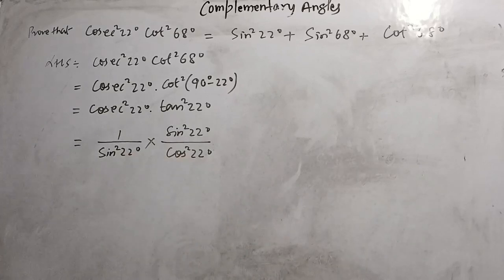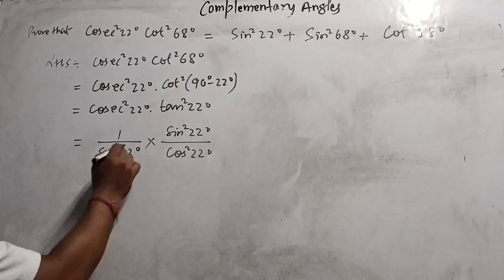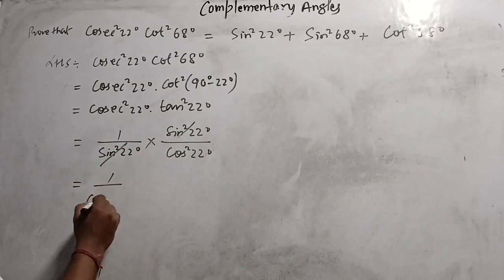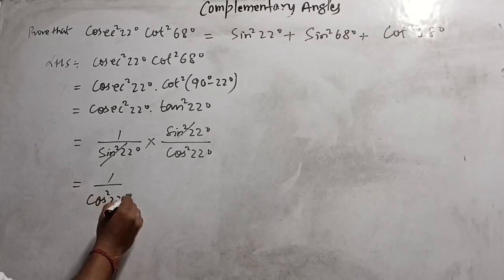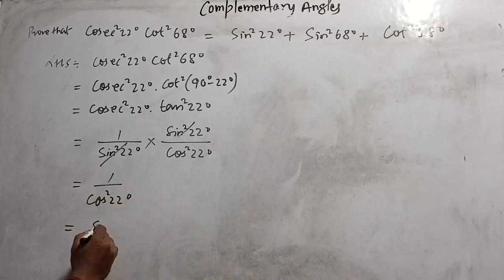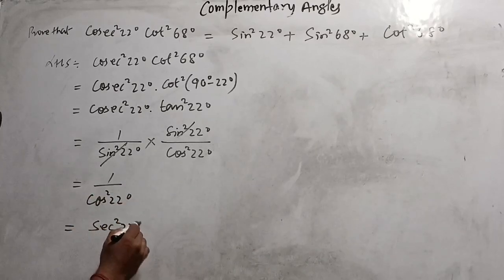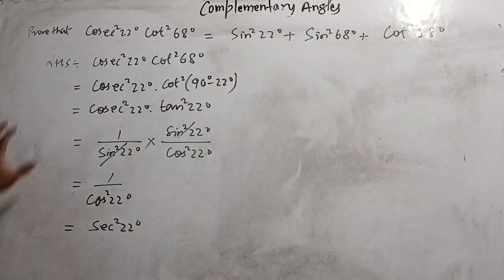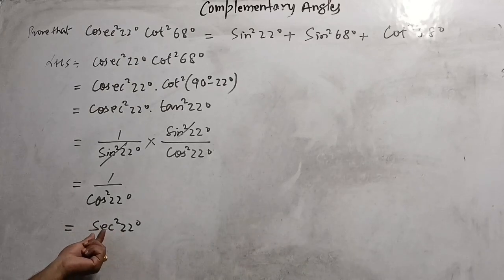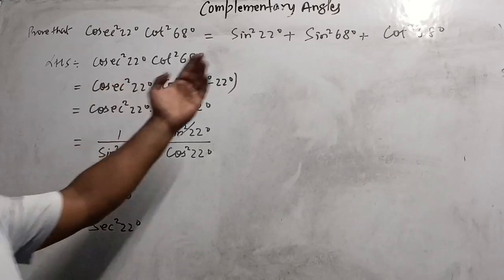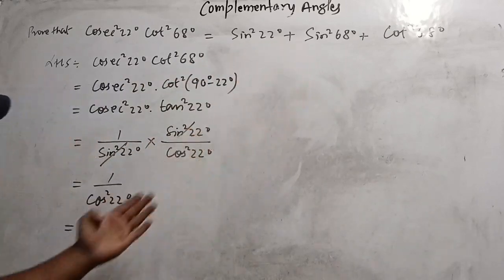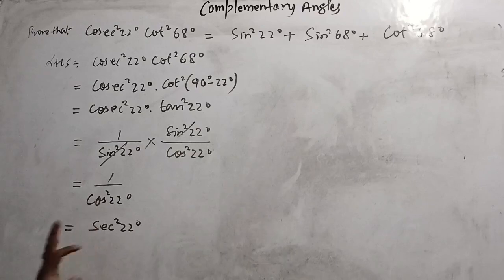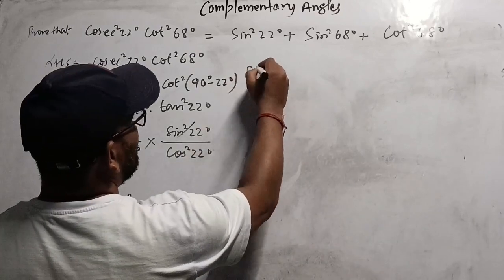You cancel terms and get 1/cos²22°, which is sec²22°. So when we solve the LHS we get sec²22° as the simplest form. Now when you try the RHS, the aim is also to bring it to sec²22°.